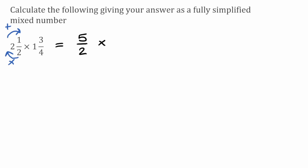So we're then multiplying that by 1 3/4, and I'm going to change that into an improper fraction. The denominator is still going to be 4, but then to find the numerator, I'm going to multiply the 4 by the 1 to give me 4, then add on the 3, which gives me 7. So this fraction would be 7 over 4. Now we're just going to multiply the fractions together — numerators multiplied together: 5 times 7 gives us 35, and then 2 multiplied by 4 gives us 8.